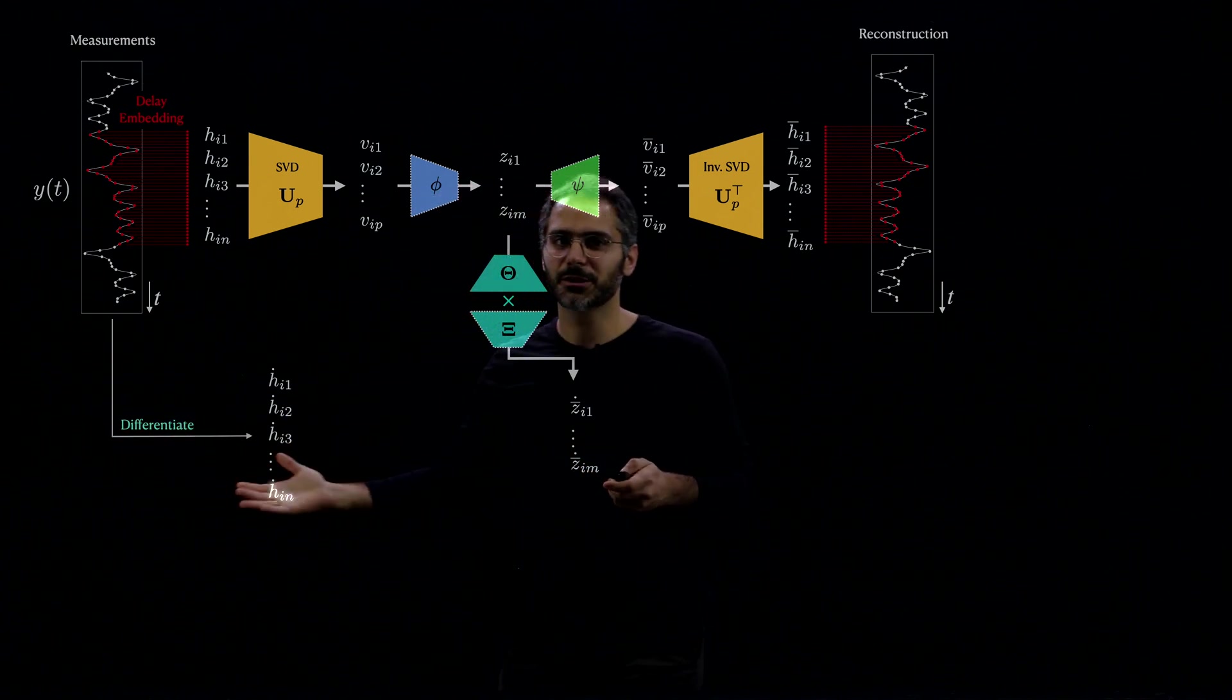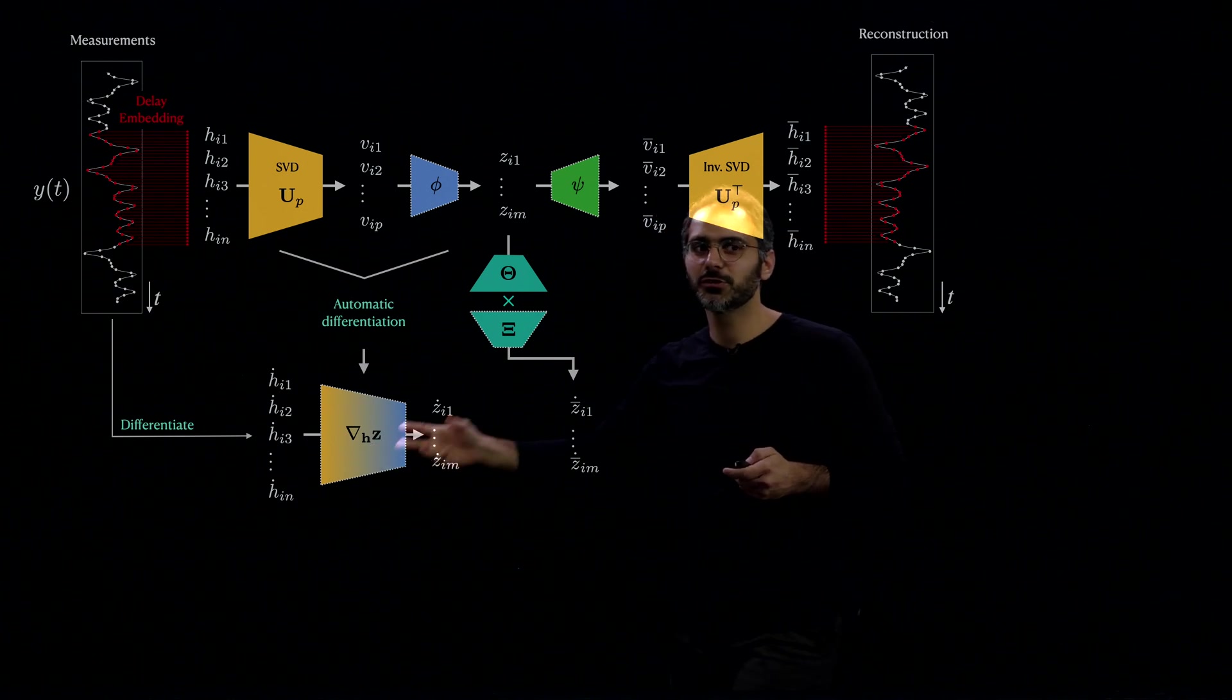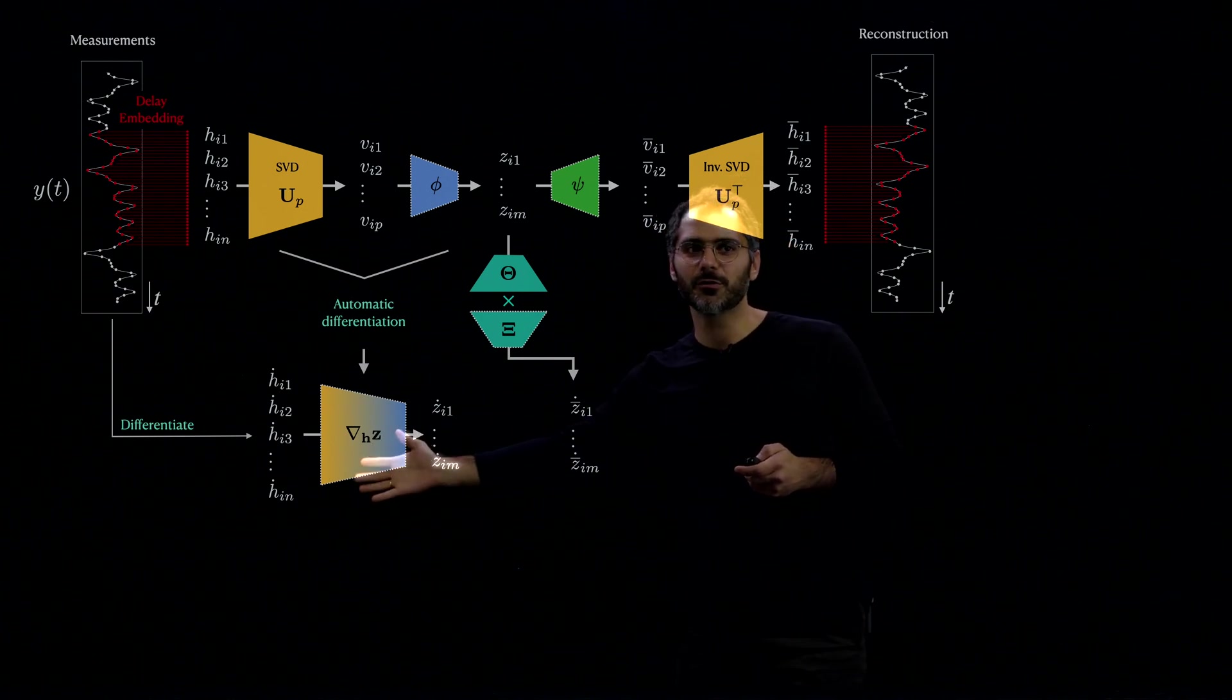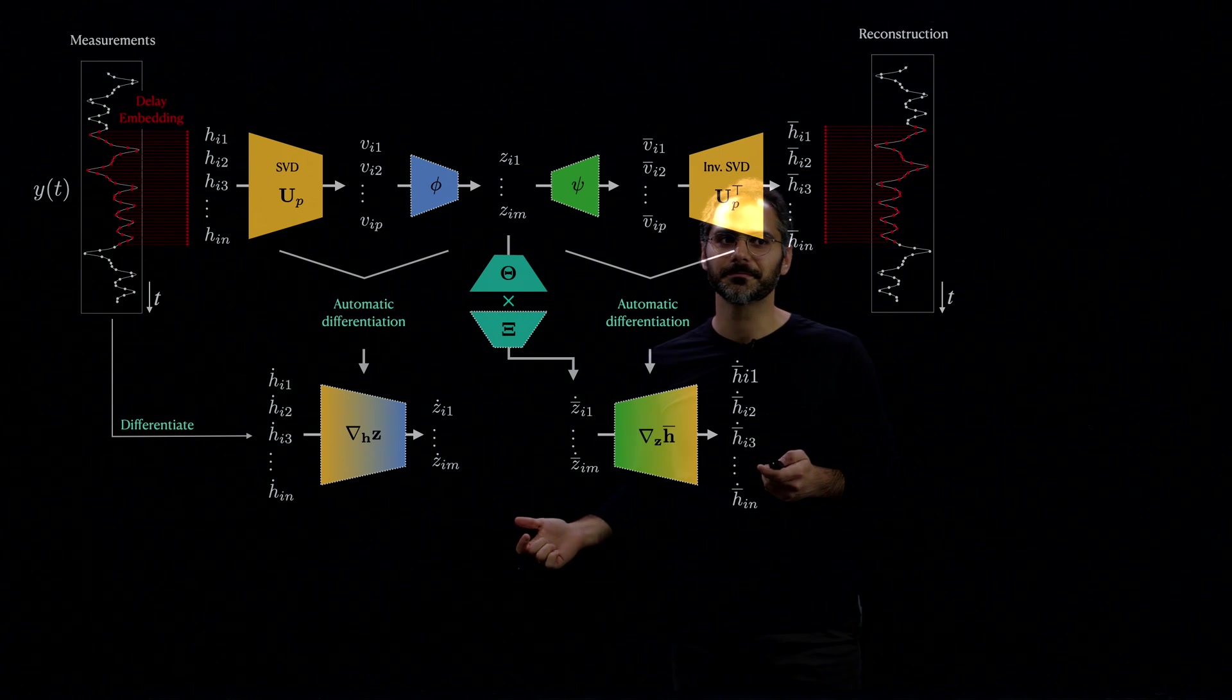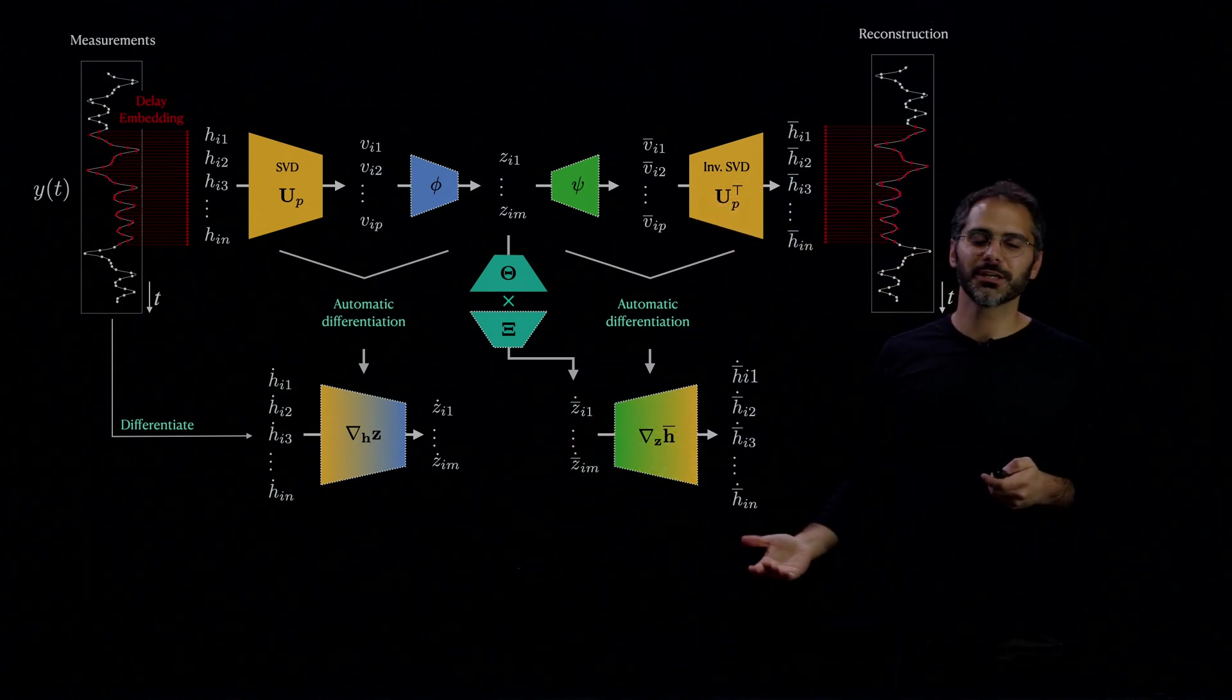And you can see in the original paper of delay autoencoders that it's useful to take the derivative of the input data, h-dot, and by automatic differentiation to get z-dot. The details of how you go from here to here are explained in the paper. Now, you can do the same thing to go from z-dot to h-dot.